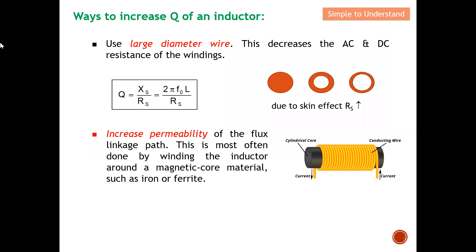Firstly, let's discuss the ways to increase Q, the quality factor, of an inductor. The first and easiest method is to use a larger diameter wire. When you use a larger diameter wire, you effectively decrease both the AC and DC resistance of the winding. Looking at this diagram and equation, if we increase the wire diameter, we have a much larger surface area for current flow, so the resistance Rs reduces. When Rs reduces, Q increases.